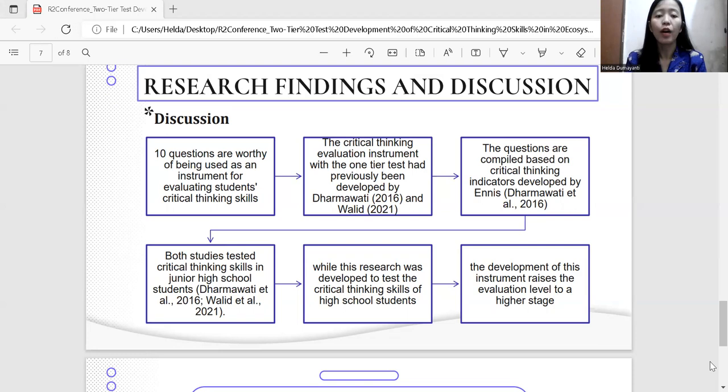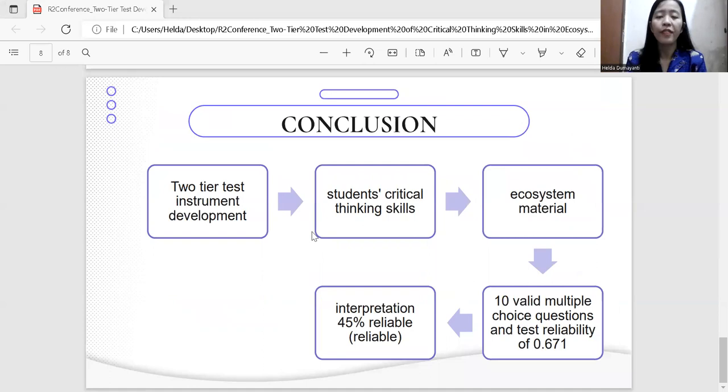Conclusion. Based on the findings and discussion above, it can be concluded that the developed two-tiered test instrument can apply to determine students' critical thinking skills in ecosystem concepts. Based on the result of the product trial, 10 valid questions were obtained and the test reliability was 0.671 with the interpretation that 45% of respondents consider the instrument developed to be reliable. Thus, the two-tiered test instrument for ecosystem critical thinking in the form of multiple choice that has been developed is valid and reliable.